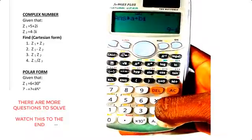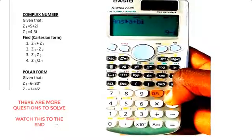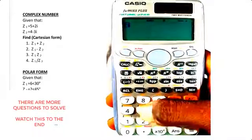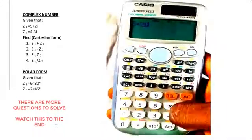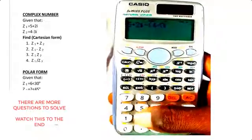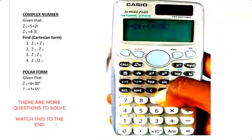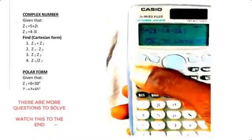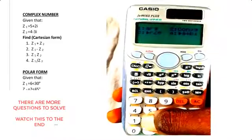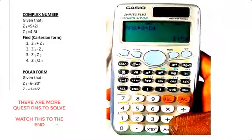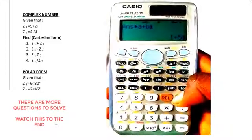Now for the second one, you want to find the difference between them. That's 5 + 2i minus open brackets 4 - 3i close brackets. You have the answer in polar form. Press Shift, 2, and 4, equals, and you get 1 + 5i.